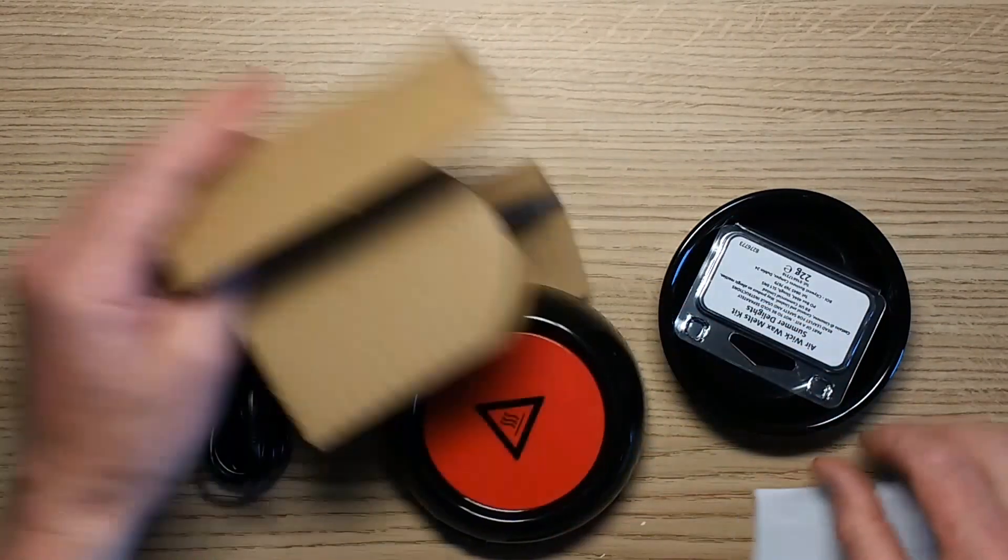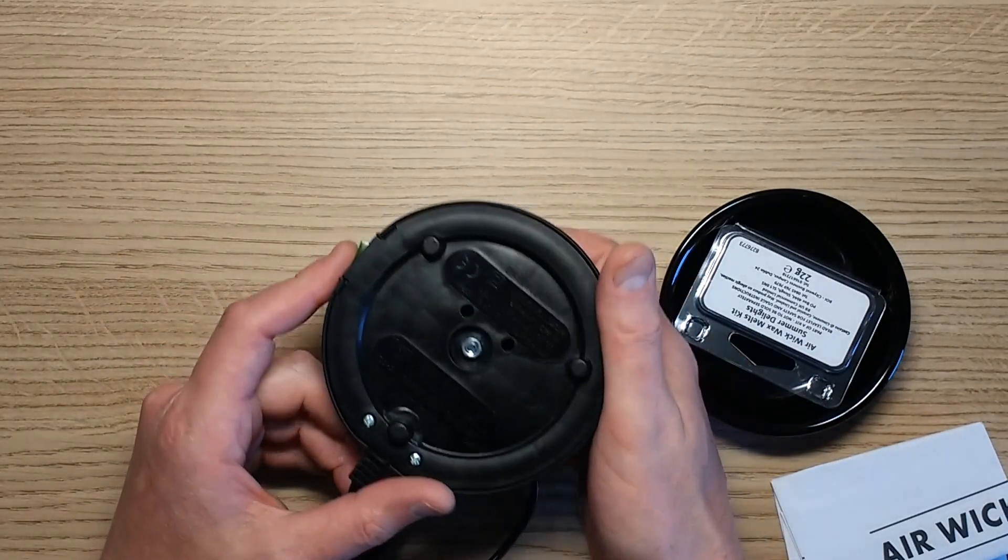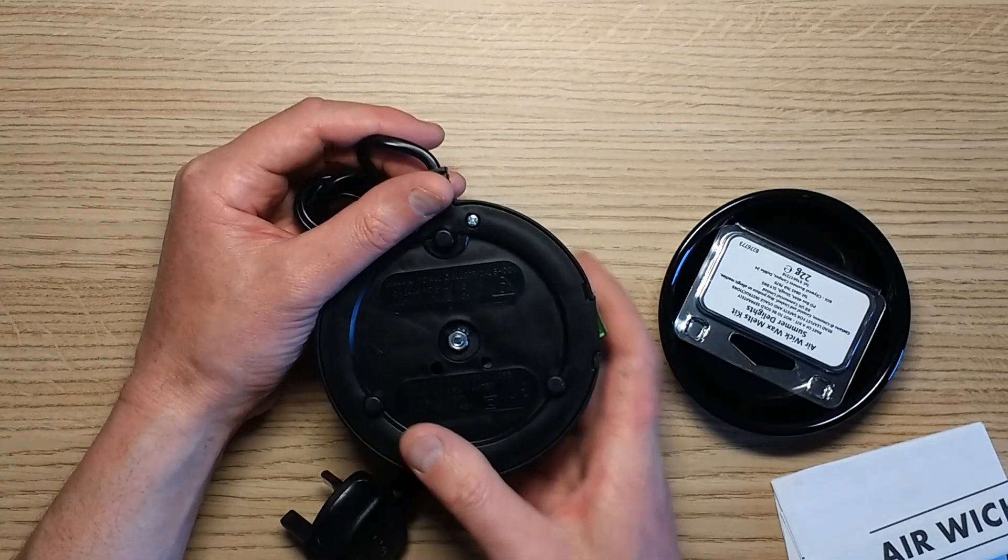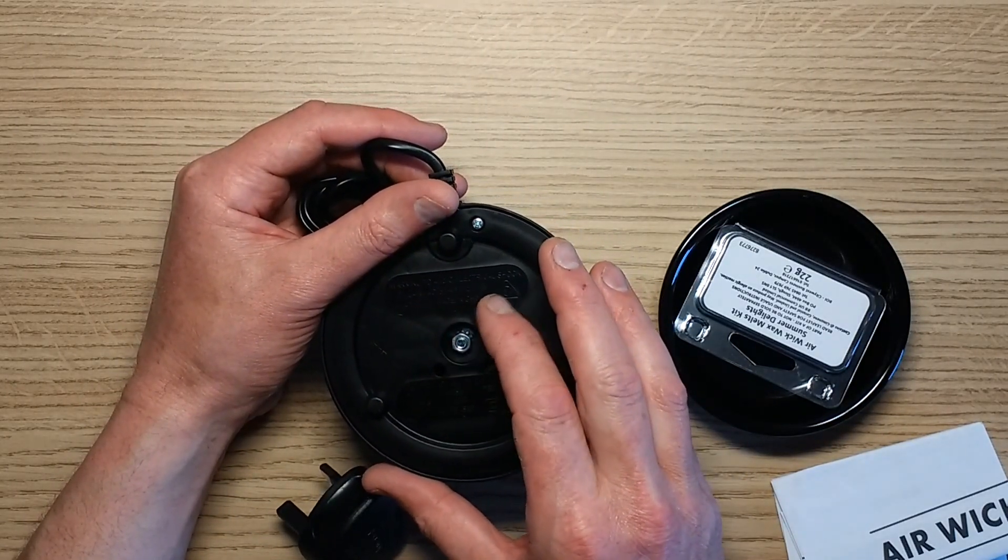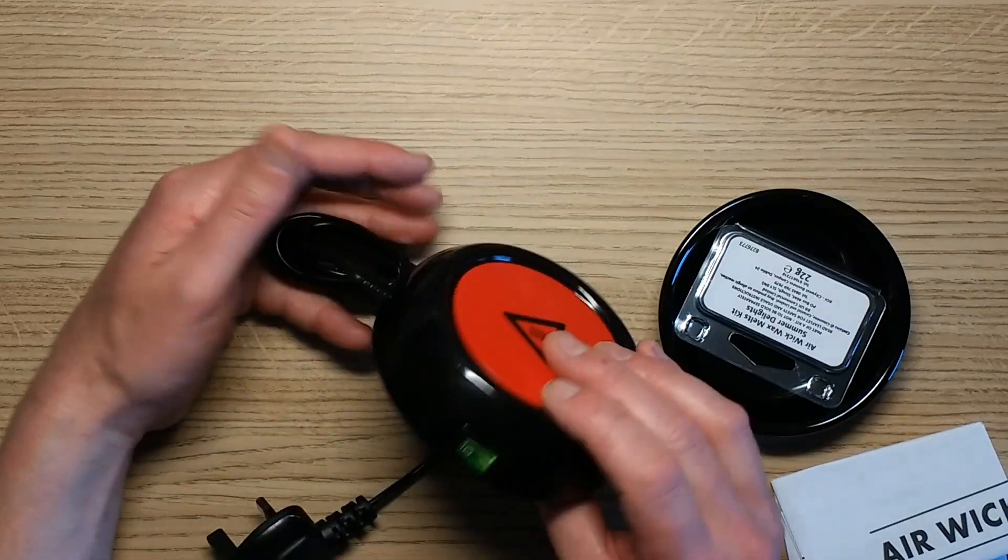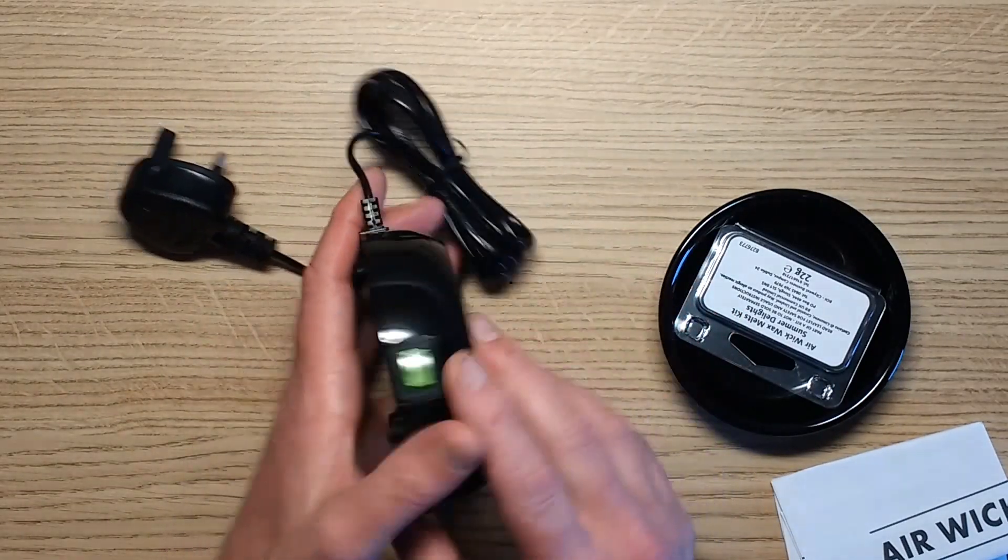So does this give a power rating? Oh it's got data on the bottom. Made in China 110 to 240 volts, 50 60 hertz 11 watts. That would suggest a positive temperature coefficient thermistor. This is where I need a power meter. I don't have a power meter here.